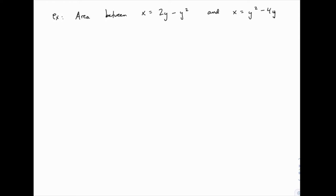In this example we're looking for the area between x equals 2y minus y squared and x equals y squared minus 4y. And this is probably unlike anything you've done, maybe ever, and the problem is that we have to graph these functions of y, which is very unusual.